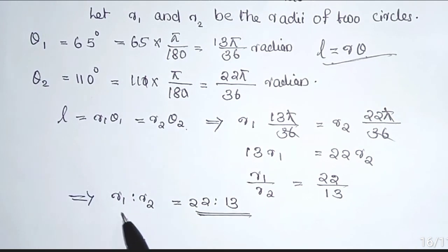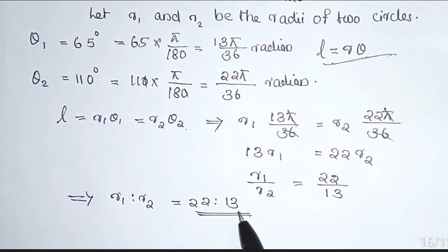This implies r₁:r₂ = 22:13. So the ratio is 22:13.